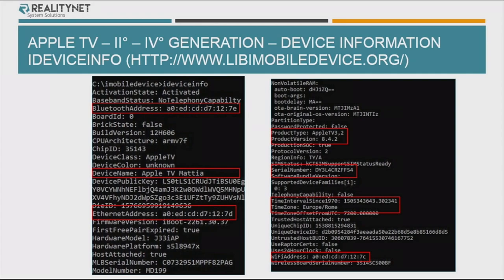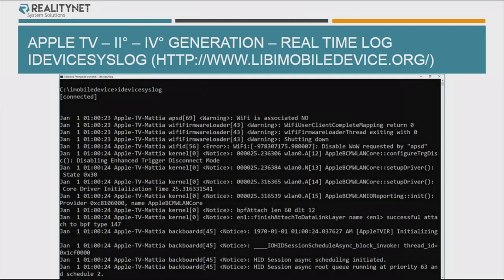With the iDeviceInfo tool, you can extract basic information from the Apple TV: the MAC address, the version of the operating system, the serial number, the time zone, the date and time, Wi-Fi MAC address, and so on and so forth. You can also get syslogs — iDeviceSyslog, again from LibiMobileDevice.